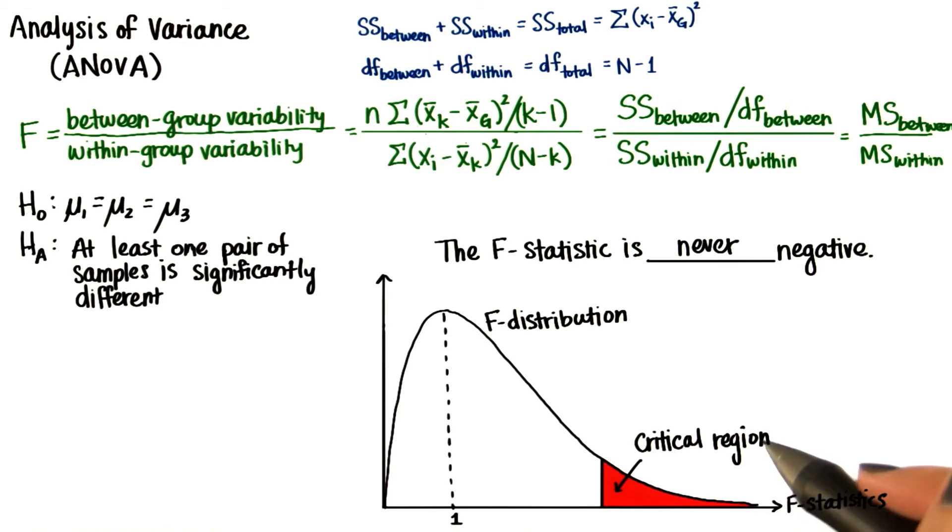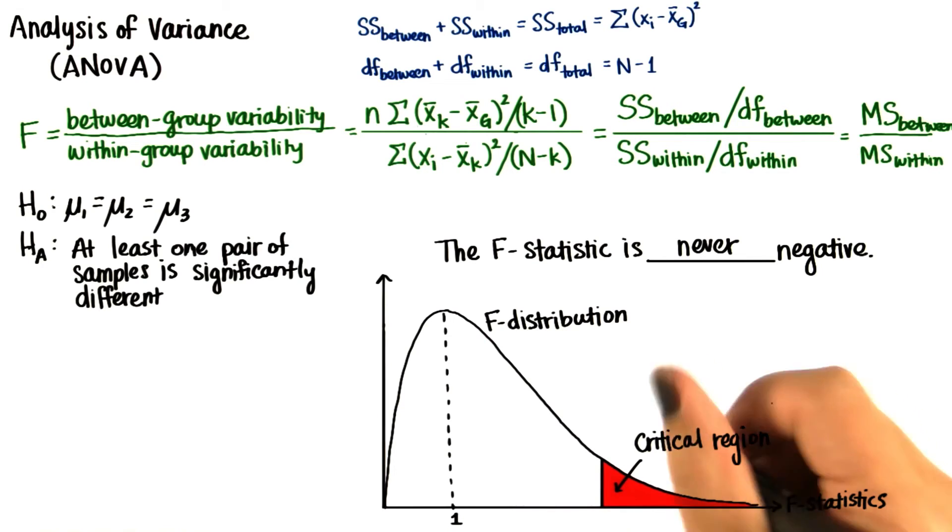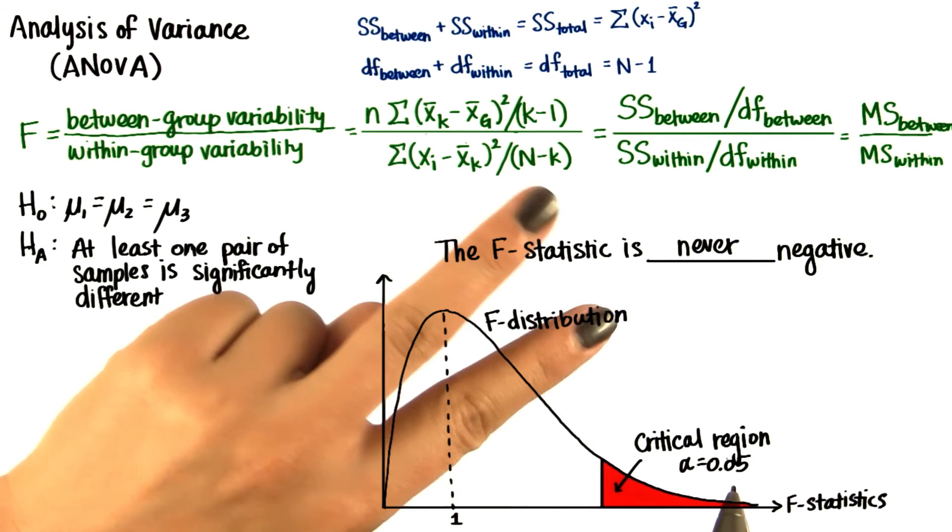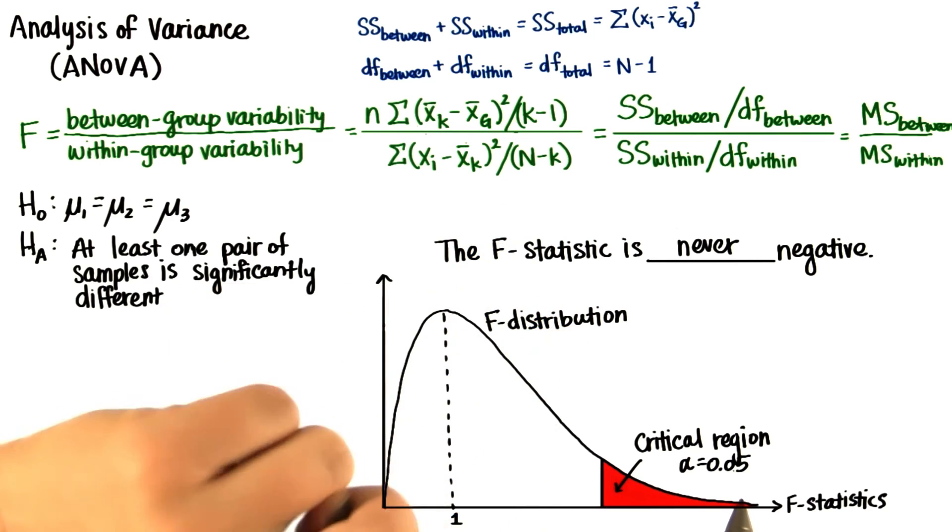But everything else is essentially the same. We choose an alpha level, usually 0.05, and then we find out if our F statistic lies in the critical region or not. If it lies in the critical region, we know that at least 2 population means will be significantly different.